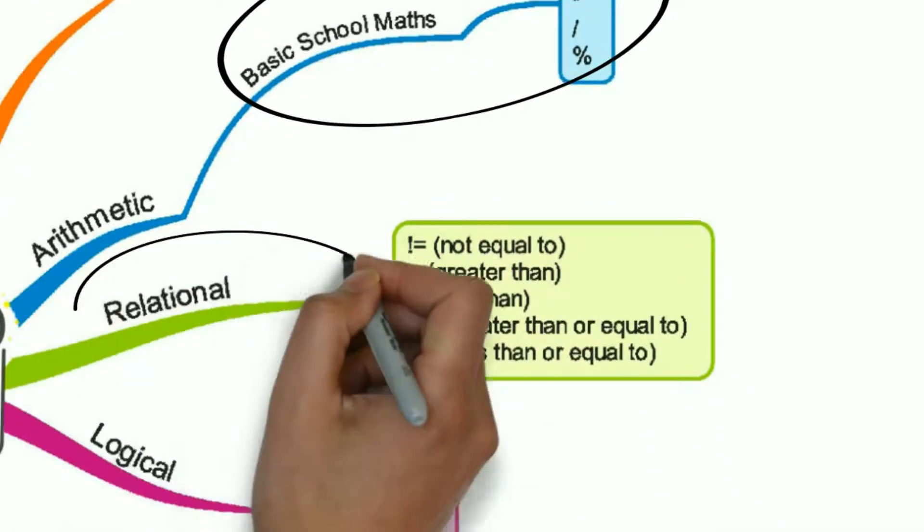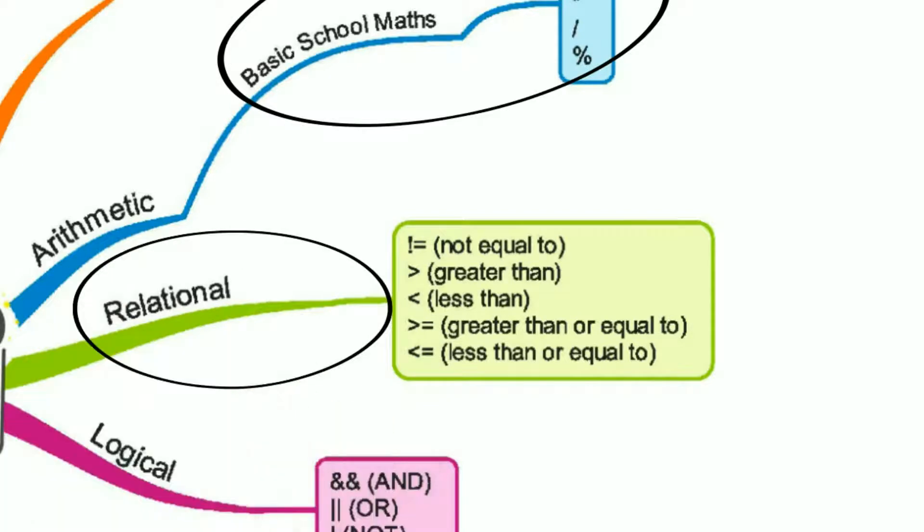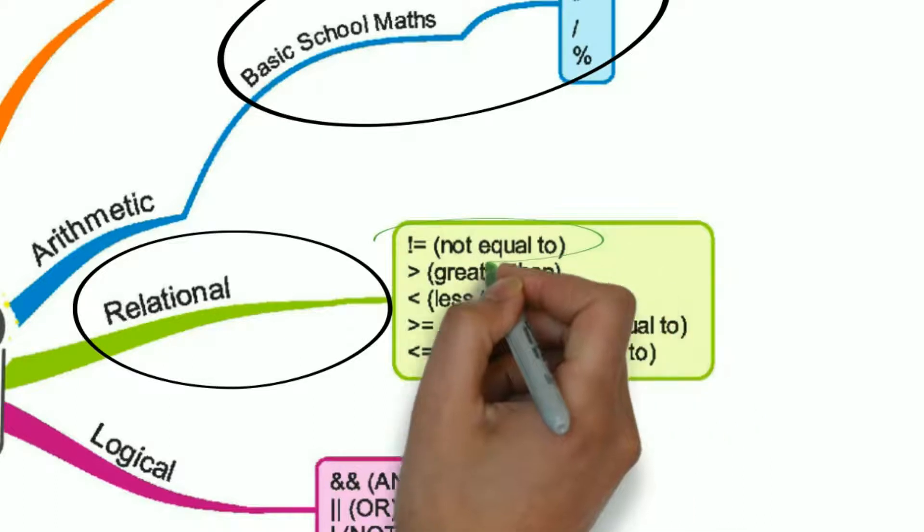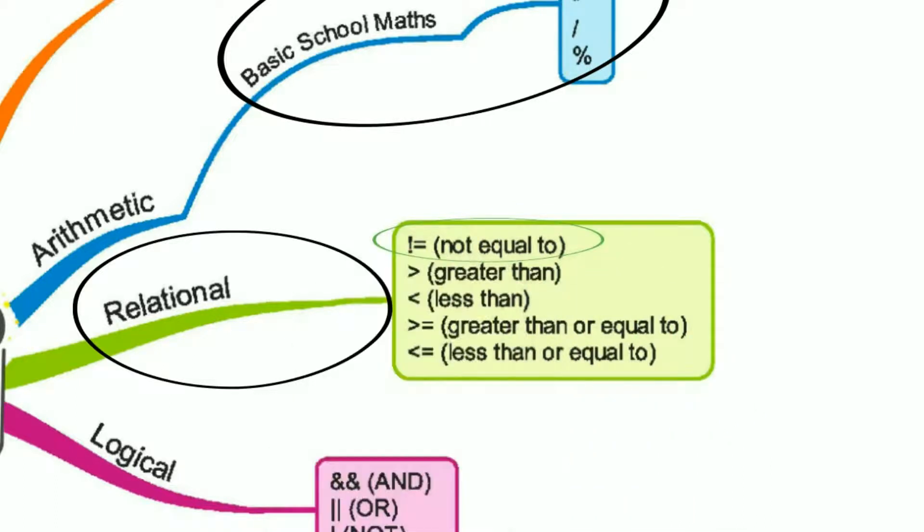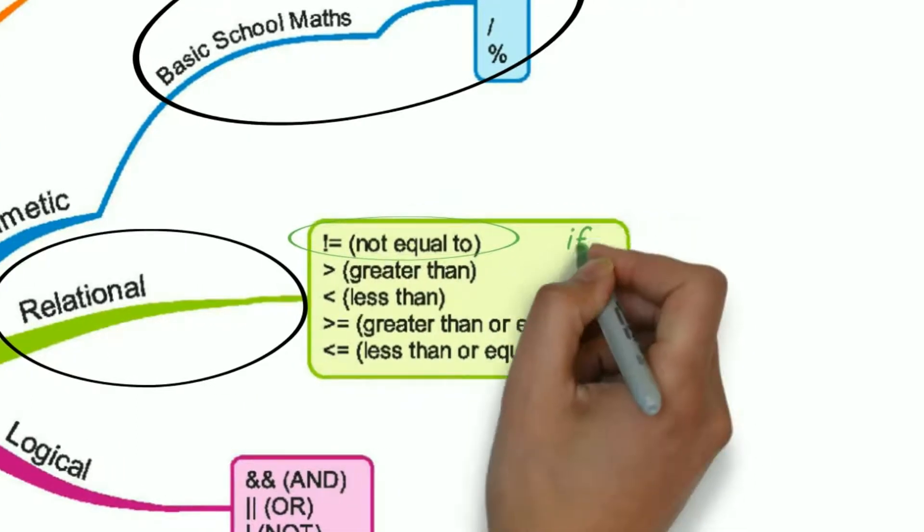Next one is relational operator. We use this operator almost everywhere. And their names explain their purpose. For example, not equal is used to compare two operands.